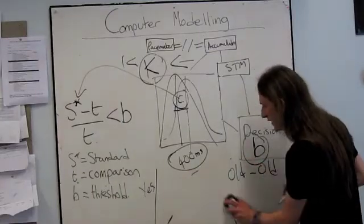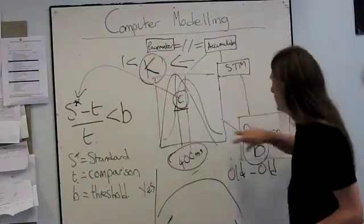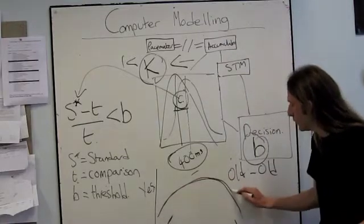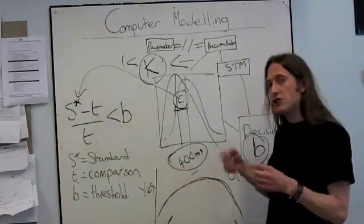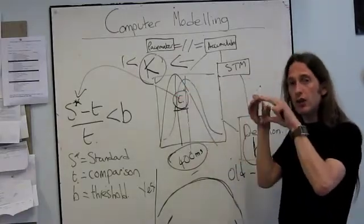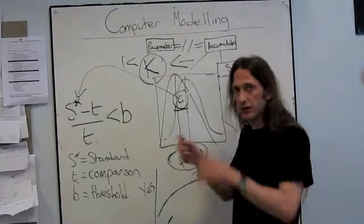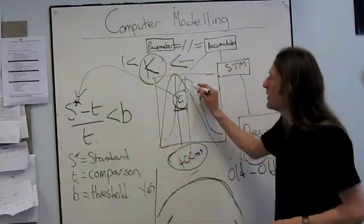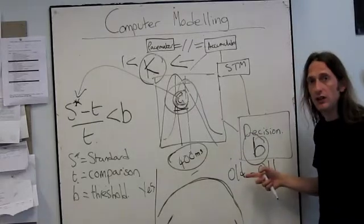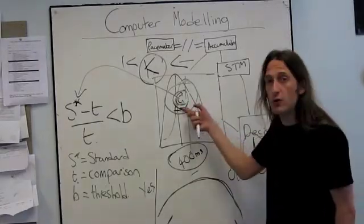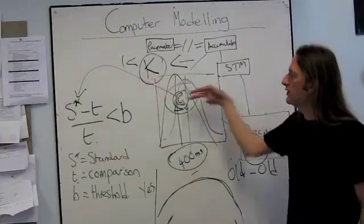We have a different set of data there. If you remember, it's a flatter function. We get the computer to run thousands and thousands of trials using different parameter values, different combinations, until its data matches that of the old old people. Then we simply go back to the computer and say: what was it you had to change between modelling the young old data and modelling the old old data? What parameter value was it that you had to change? And the one that had to change was C — how variable their long-term memory for duration was. The difference between the young old and the old old was memory variability. It wasn't anything to do with their decision processes. It wasn't anything to do with any kind of distortion parameter; they weren't shifted systematically left or right.